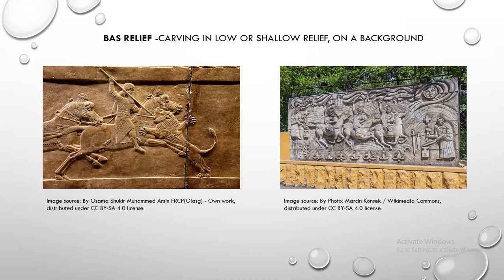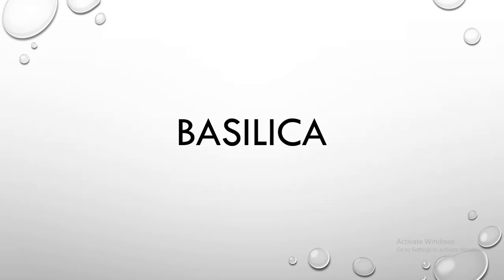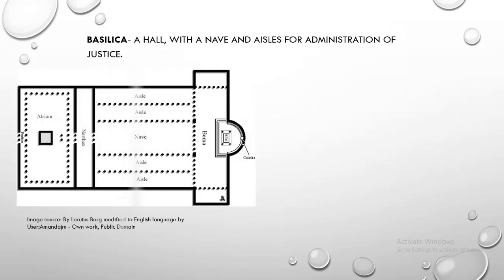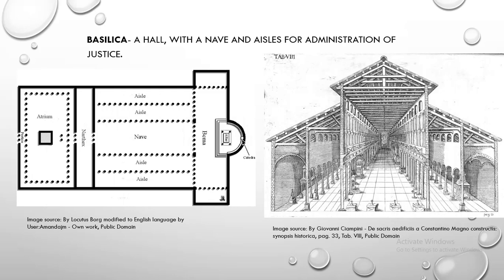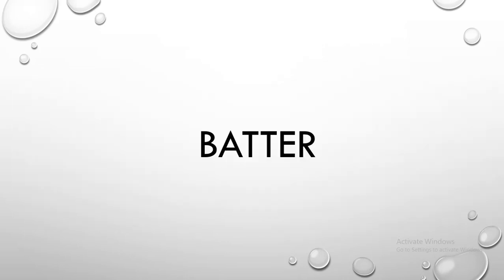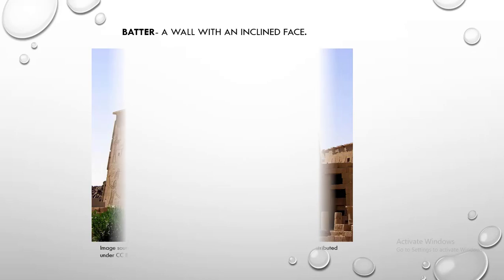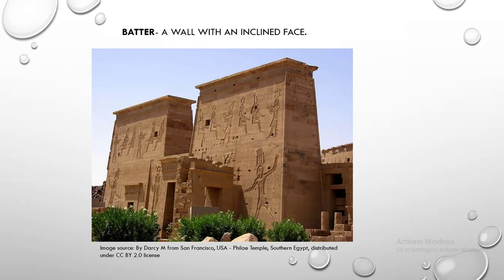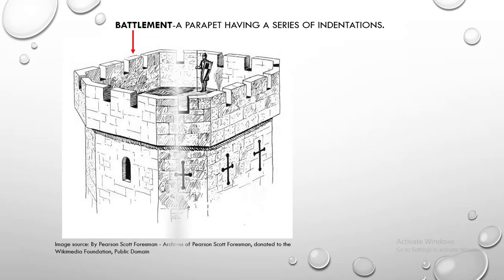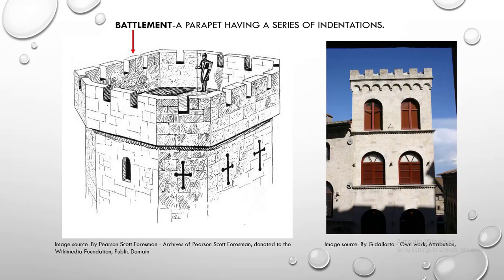Bas-relief. Bas-relief is the carving in low or shallow relief on a background. Basilica. Basilica is a hall with a nave and aisles for administration of justice. Batter. Batter is a wall with an inclined face. Battlement. Battlement is a parapet having a series of indentations.